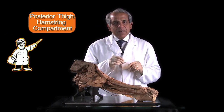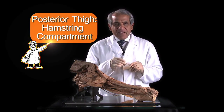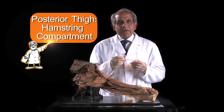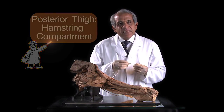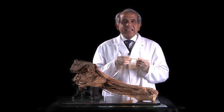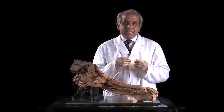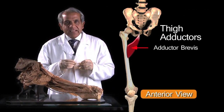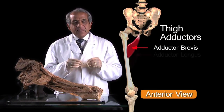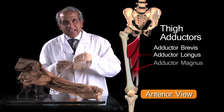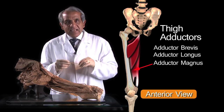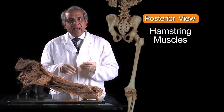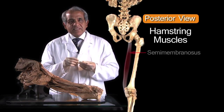The posterior compartment of the thigh, which lies behind the femoral shaft and behind the medial and lateral intermuscular septum, has two groups of muscle within it: the adductor muscles on the medial aspect, and on the posterior aspect, the hamstring muscles.